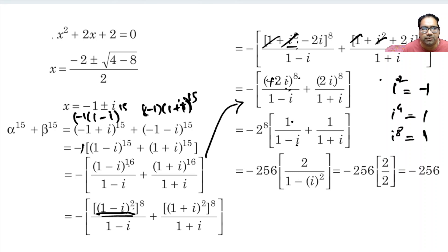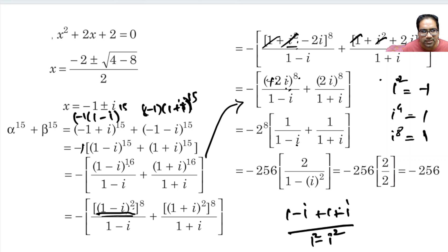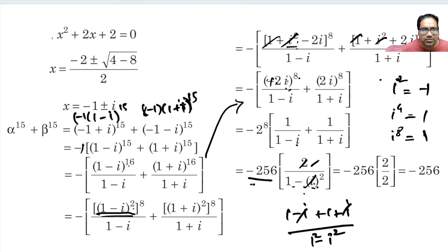We simplify 1/(1 - i) + 1/(1 + i) by combining over the common denominator (1 - i)(1 + i). The numerator becomes (1 - i) + (1 + i) = 2. The denominator is 1² - i² = 1 - (minus 1) = 2. So 2 over 2 equals 1. This means the entire expression is minus 2⁸ times 1, which equals minus 256. So minus 256 is the correct answer.